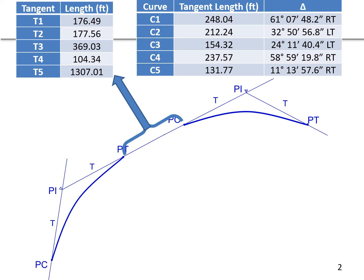Looking back at the tangents: the tangent table tells us the lengths between the curves, from the PT of one curve to the PC of the successive curve. In the curve table, the tangent lengths provided are the T values — the same T we use when calculating horizontal curves. That T is what's in this table.